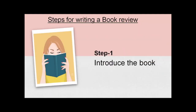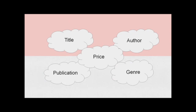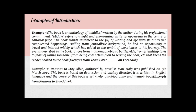Now let's start with the steps for writing a book review. The first step is to introduce the book, which includes the title of the book, author, price, publication, and the genre the book is placed in. Here are two examples that show how book reviewers have introduced the book in the first paragraph by mentioning the title, author's name, and genre of the book.